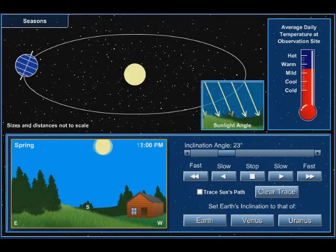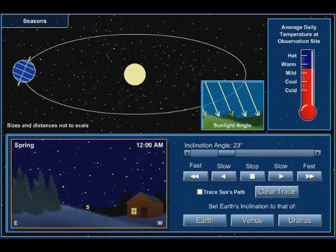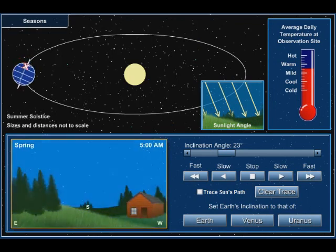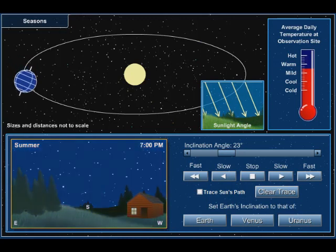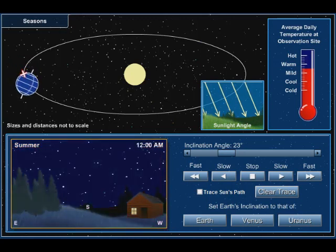Now this is a cool little animation from Seasons Interactive from McGraw Hill. I wanted to show you what it actually looks like when a planet's axis tilt changes when we move from Earth to Venus to Uranus.